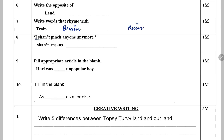Next: 'I shan't pinch anyone anymore.' Shan't — full form aapko likhna hai. Full form is 'shall not'. Next: Fill in the appropriate article in the blank. Teen articles hote hain: a, an, and the. 'Hari was blank unpopular boy.' Jo word hai uska first alphabet vowel hai, toh yahaan par aayega 'an'.